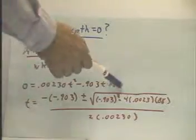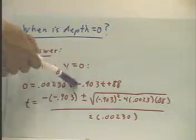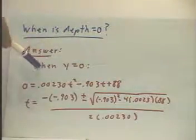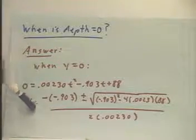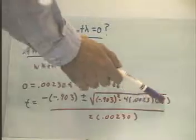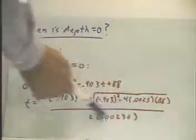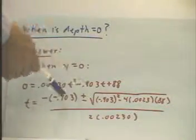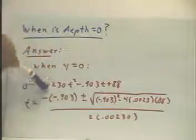And we obtain this equation, which we easily solve for t from the quadratic formula. You recall that t is going to be negative b plus or minus the square root of b squared minus 4ac all over 2 times a. And this is an expression that we can easily evaluate.